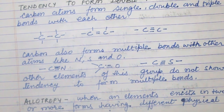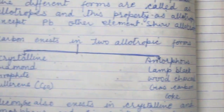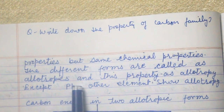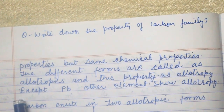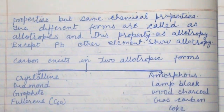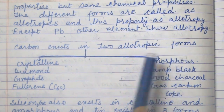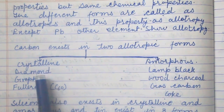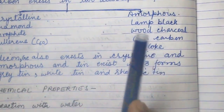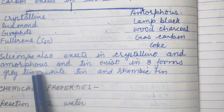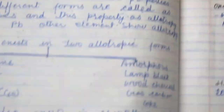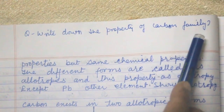Allotropy is when an element exists in two or more forms having different physical properties but the same chemical properties; these different forms are called allotropes. Except lead, all other elements in this group show allotropy. Carbon exists in two allotropic forms: crystalline (diamond, graphite, fullerenes) and amorphous (lamp black, wood charcoal, gas carbon). Silicon and germanium also exist in crystalline and amorphous forms, and tin exists in three forms: gray tin, white tin, and rhombic tin.